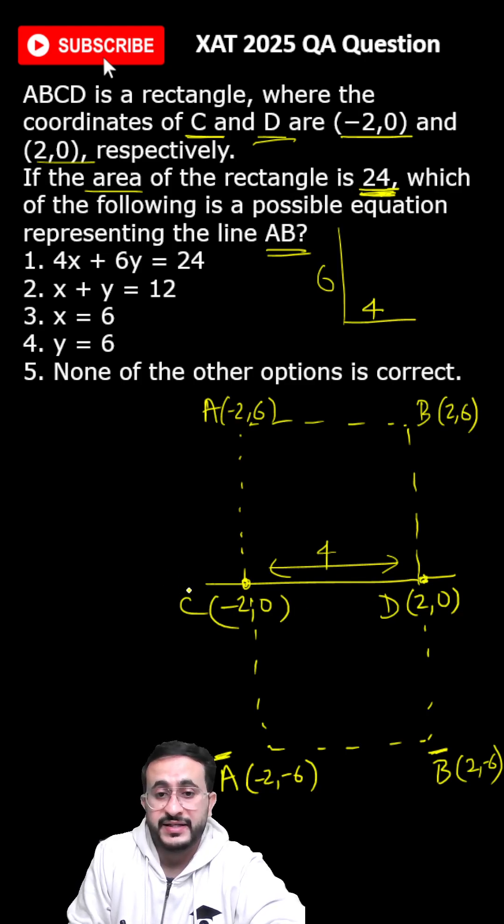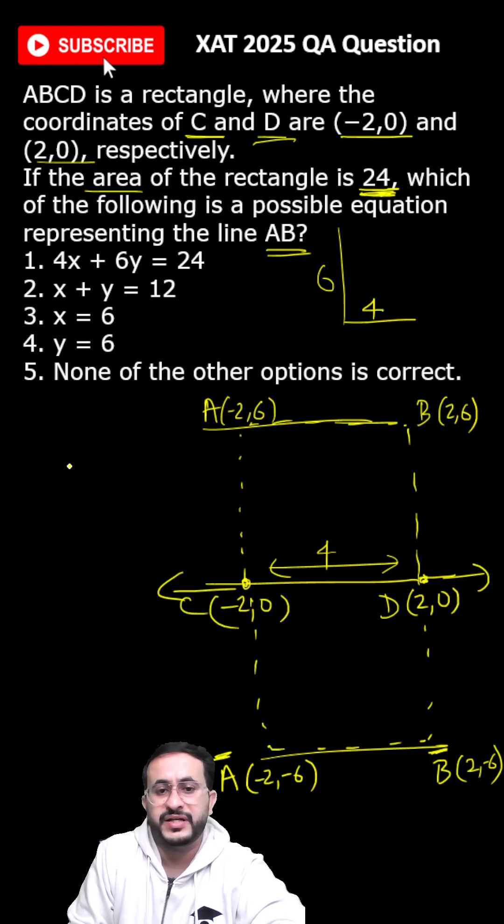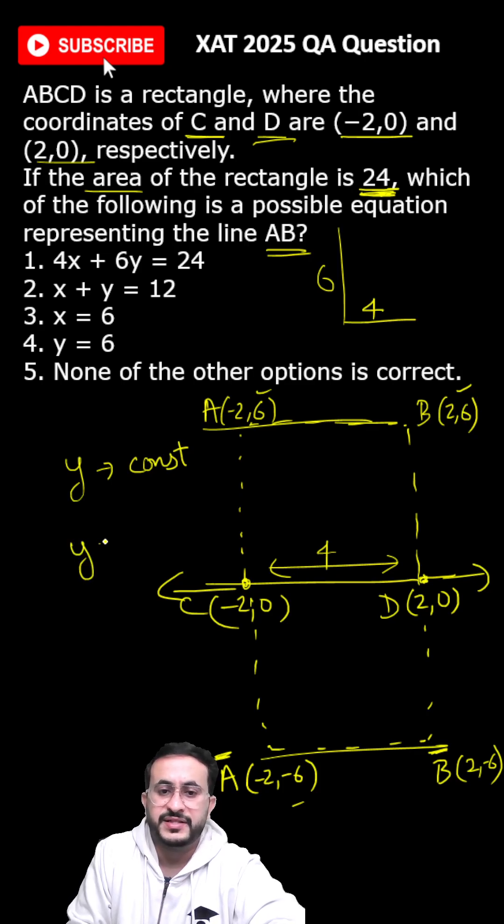Now, this is the x-axis and we have a line which is parallel to the x-axis. Whenever we have a line parallel to the x-axis, y is constant. Either it will be y = 6 or y = -6.